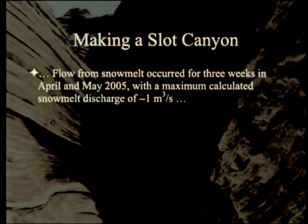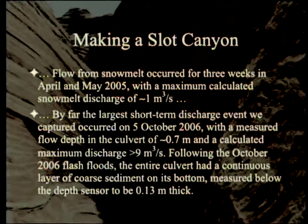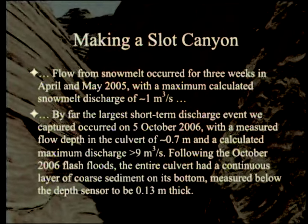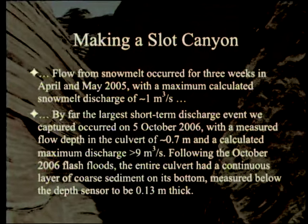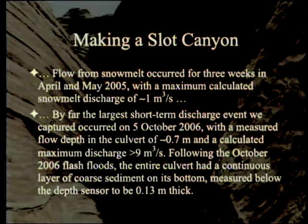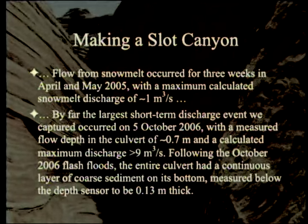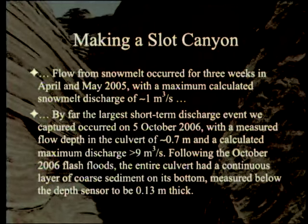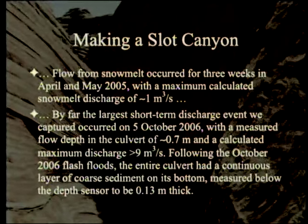By far the largest short-term discharge event captured occurred on 5 October 2006, with a measured flow depth in the culvert of 0.7 meters and a calculated maximum discharge of over nine cubic meters per second. Following the October 2006 flash flood, the entire culvert had a continuous layer of coarse sediment on its bottom, measured at 0.13 meters thick — about 13 centimeters — filling the bottom of the culvert and this little slot canyon.